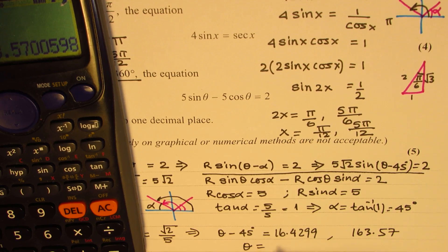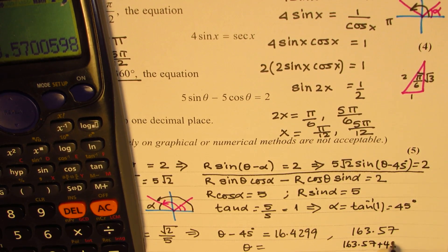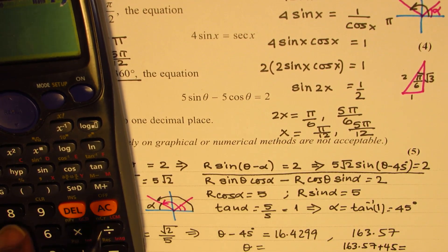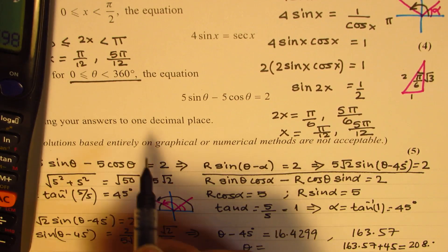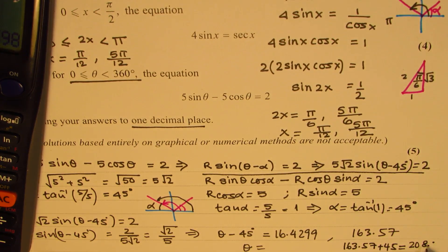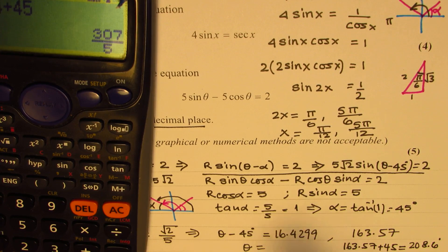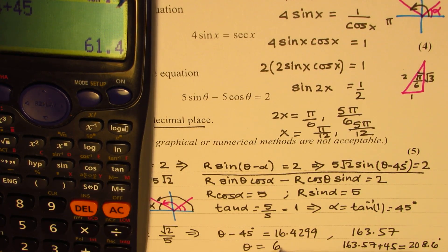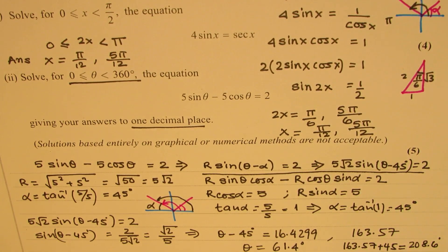θ equals these values plus 45 degrees. So 163.57 plus 45 gives 208.57, which rounds to 208.6 degrees. And 16.43 plus 45 gives 61.4 degrees. To one decimal place, the two answers are 61.4 degrees and 208.6 degrees.